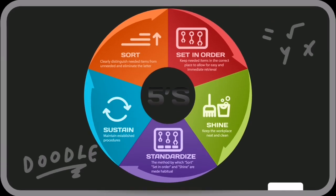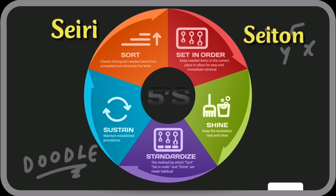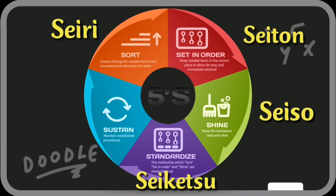5S are steps involving going through everything in a space, deciding what's necessary and what isn't, putting things in order, cleaning, and setting up procedures for performing these tasks on a regular basis. 5S stands for Seiri or sorting, Seiton or set in order, Seiso or shine, Seiketsu or standardize, and Shitsuke or sustain.